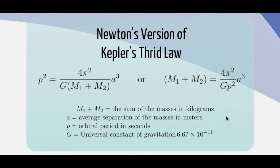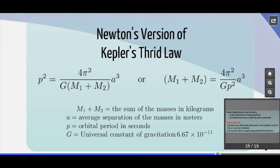Here they're working with Newton's form. We have to be very careful about our units. For the masses, I have to use kilograms. For the average separation, I need to use meters. And for the orbital period, I need to use seconds. The value of the universal constant of gravitation is 6.67 times 10 to the minus 11.